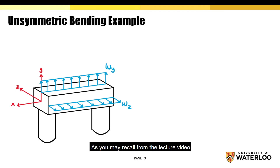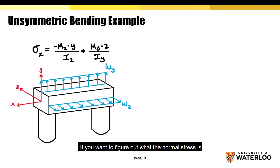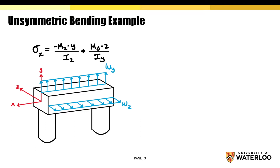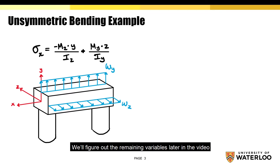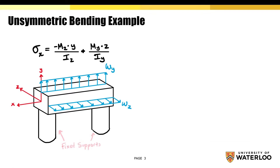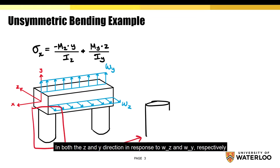As you may recall from the lecture video, the normal stress equation is as follows. To figure out what the normal stress is, the first thing we'll have to do is figure out what Mz and My are, and that's basically what we'll be doing on this slide. Notice how the beam has two fixed ends, which means the support can resist reaction forces in both the z and y directions, responding to Wz and Wy respectively.